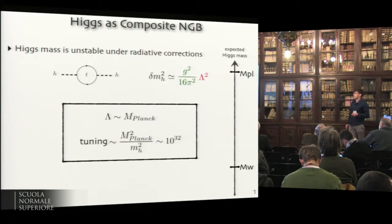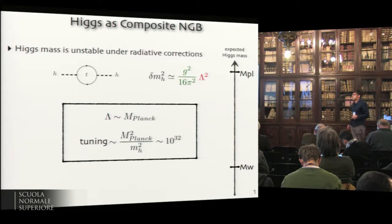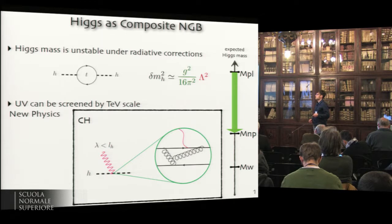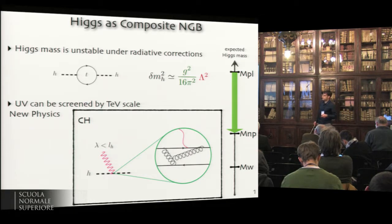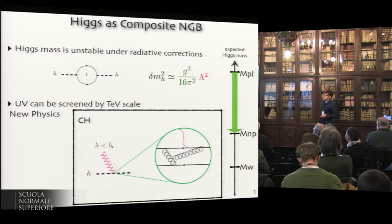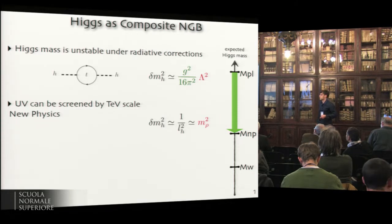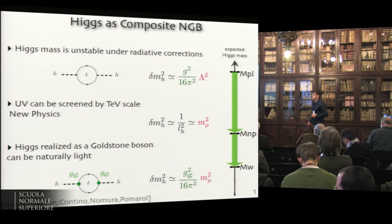The composite Higgs is motivated by the hierarchy problem — a composite Higgs would not be sensitive to whatever high energy scales are present in the theory. To solve the little hierarchy problem typically present in this kind of theory, we impose an additional feature: the Higgs as an approximate Goldstone boson. Its mass then has additional protection and can naturally be lighter than the masses of the other composite resonances. These two ingredients — compositeness and Goldstone nature — are the main features of the models discussed.